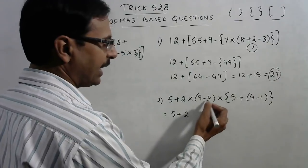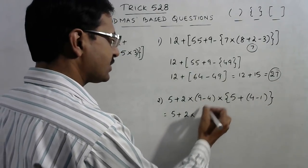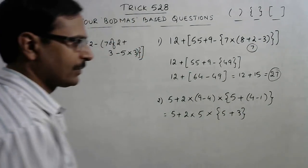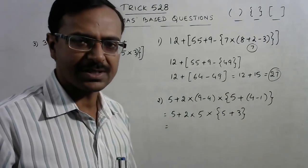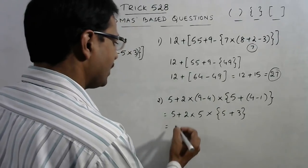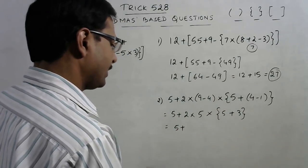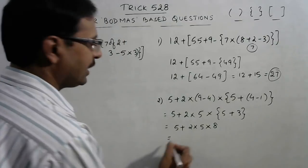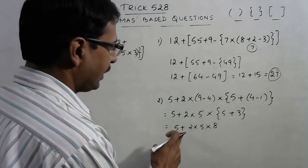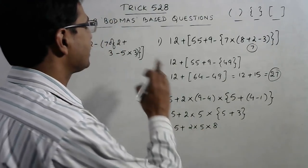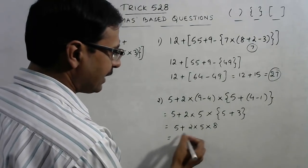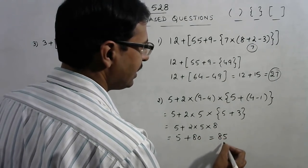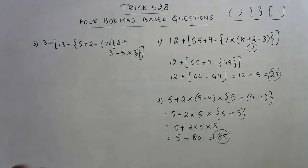For the next question, there are two small brackets: 9 minus 4 is 5, and 4 minus 1 is 3. Once the sequence of steps is known, the results follow easily. Now we have 5 plus 2 into 5, and removing the remaining bracket gives 5 plus 3 is 8. Multiplication comes before addition, so 2 times 5 times 8 is 80. With addition: 5 plus 80 gives the answer 85.